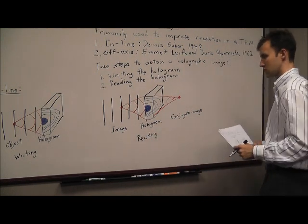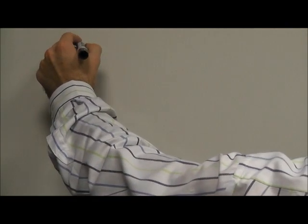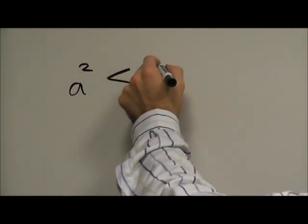This requires the product of the length, L, and the wavelength of the electrons, lambda, to be much greater than the object's size, A, squared.